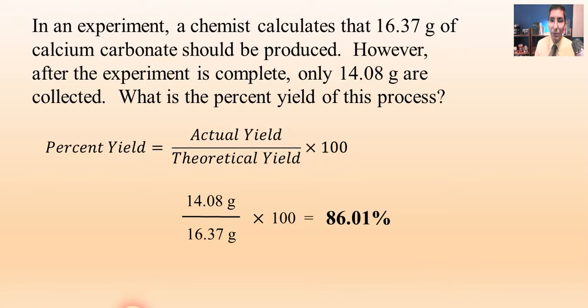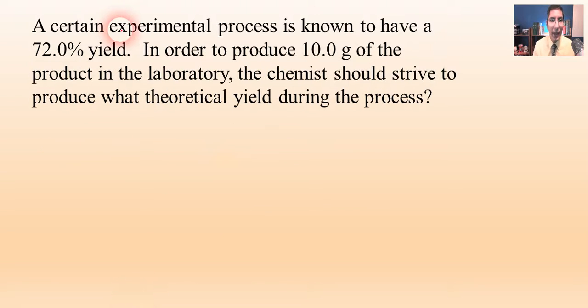Now, sometimes there's a little bit more involved. For example, let's say that we have an experimental process that we've done many times and we know that over the long term it tends to have about a 72.0% yield. But we want to make, we really want to make 10 grams of the product. Well, that means that the chemist should strive to produce what theoretical yield during the process. So do you understand the problem here? We know it's a 72% yield. We really want 10 grams. So we should be shooting for more than that, shouldn't we? Because we know that only 72% will actually be made.